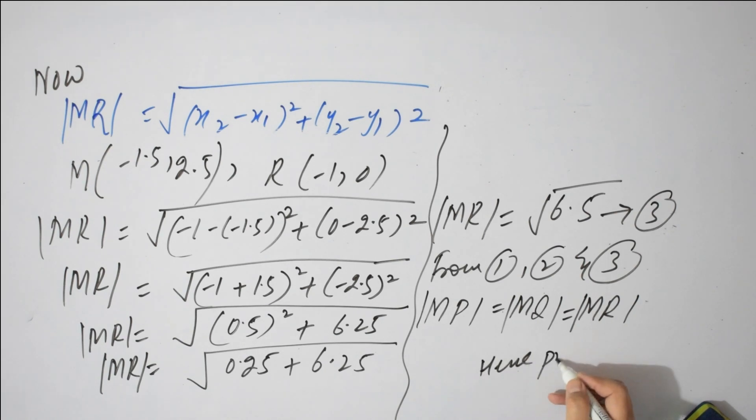Hence proved. This is your question number third: M is a midpoint of hypotenuse and distance of this midpoint from 3 vertices, that is from P, from Q and from R, it is equal, same. This midpoint is equidistant from these 3 vertices.